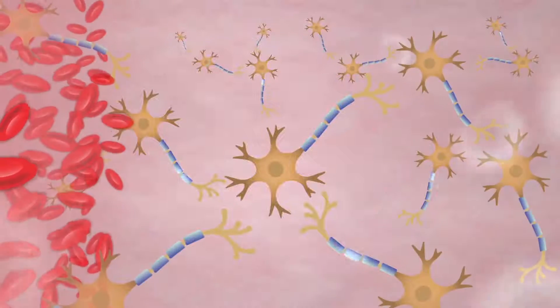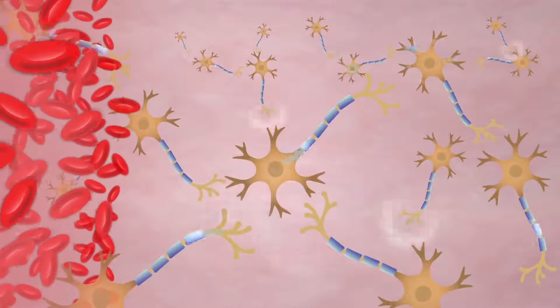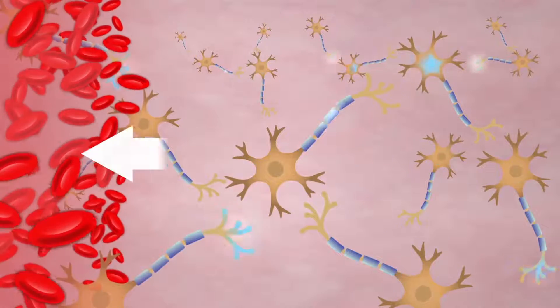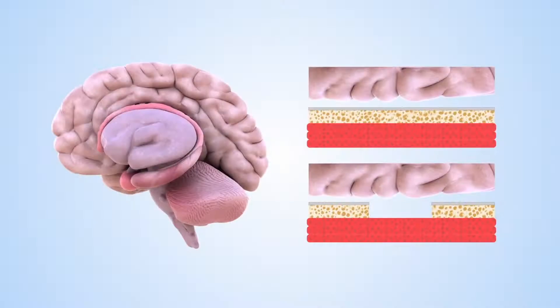As a group of neurons are active, or fire, in response to a task or stimulus, they require more nutritive blood. However, blood flow balance is essential.